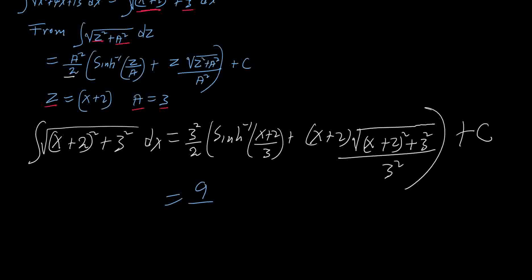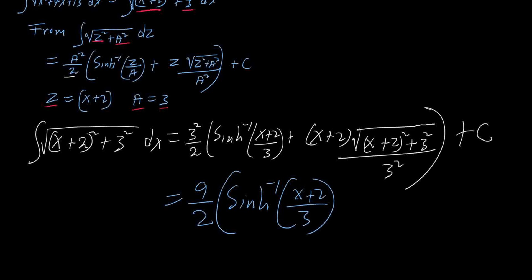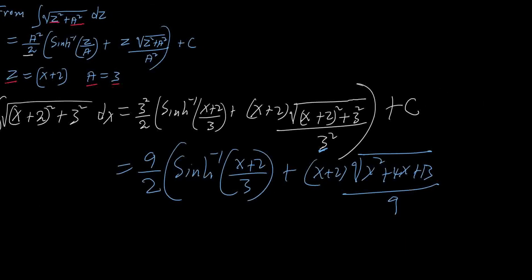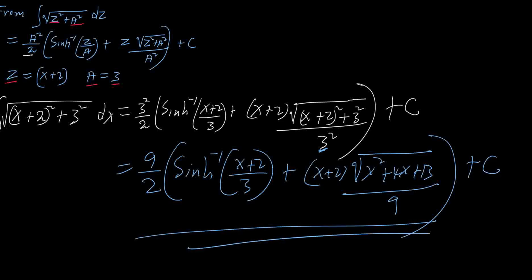So this equals 9 over 2 times sinh inverse of (x+2) over 3, plus (x+2) times root of x squared plus 4x plus 13 over 9 — put this in bigger parenthesis — plus C. This is the final answer to this question.